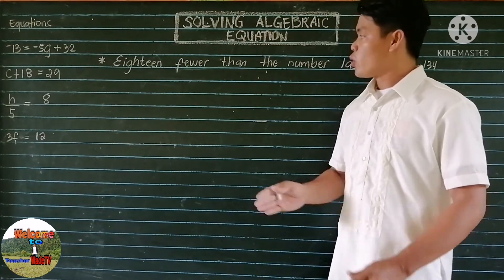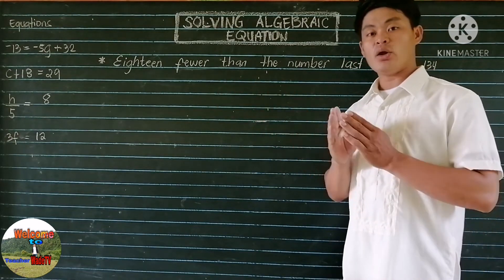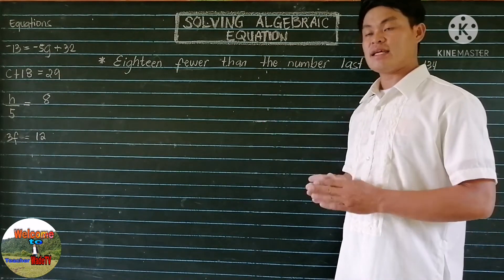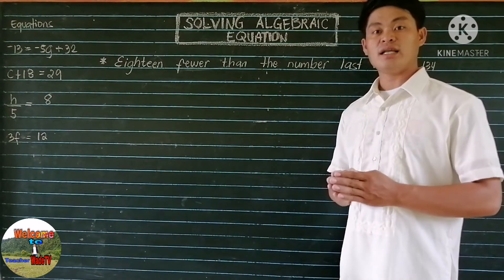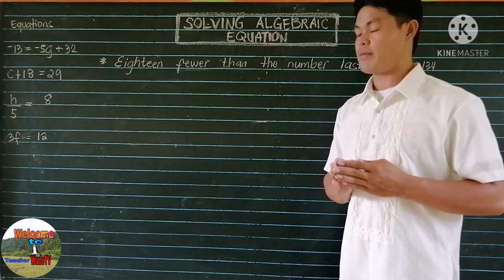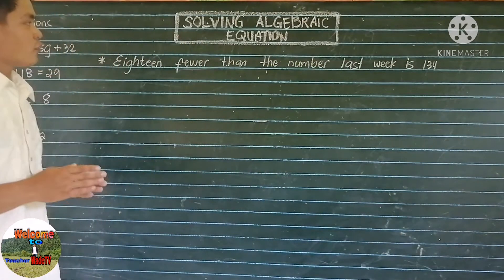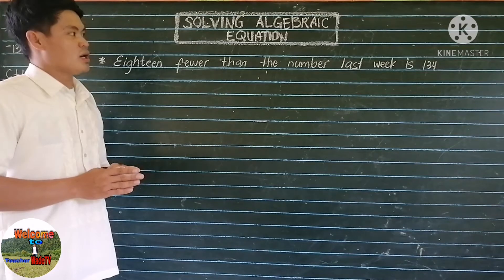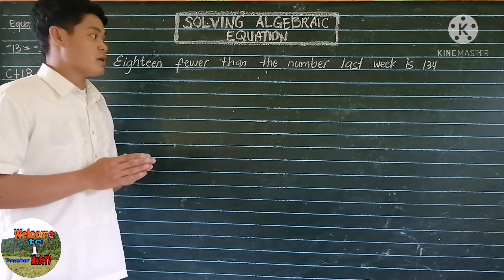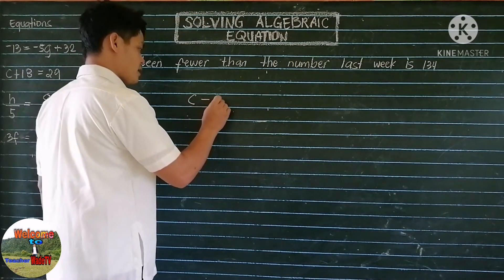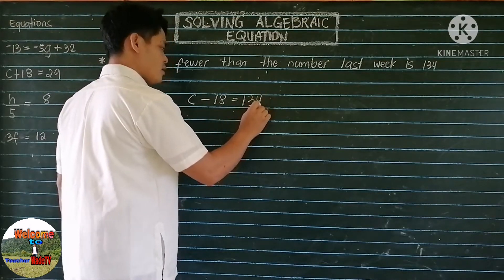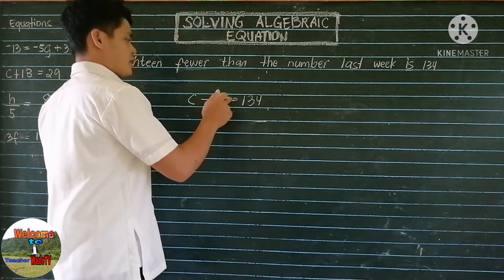To start with, we have here a word phrase. In order for us to solve this word phrase, we need to translate it into a mathematical equation. We will apply the lesson that we learned last time. We have: 18 fewer than the number last week is 134. So the equation must be C minus 18 equals 134.